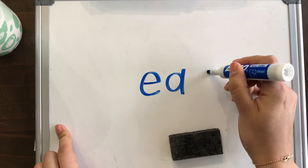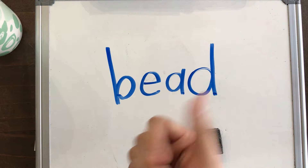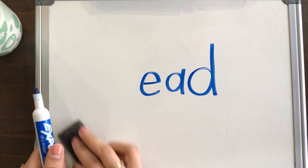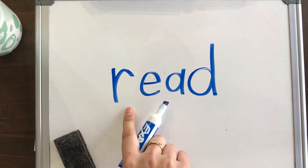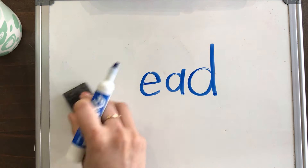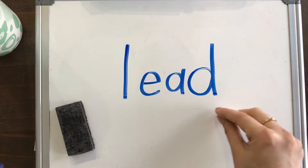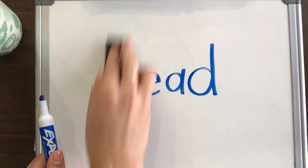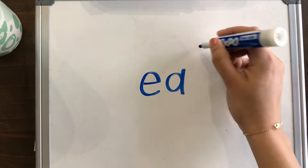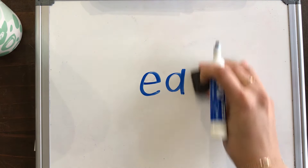I also could have B-E-D: BEAD, like I'm going to bead a necklace. R-E-D: READ — I hope you all read today. LEAD — L-E-D: lead. Those are all more examples of a long E. You could also have EAT. It could be in the beginning of the word or in the middle of the word.